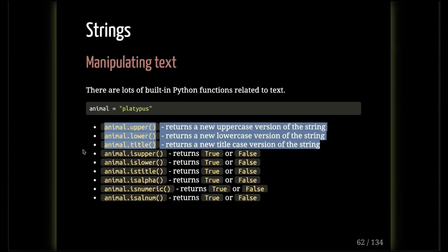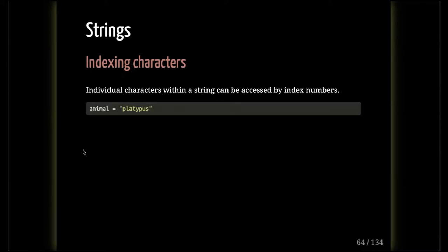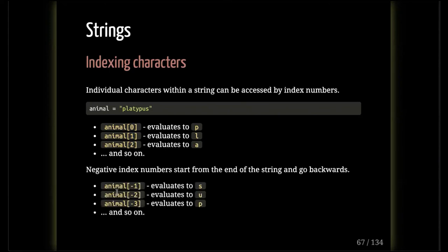You also have the ability to index characters within a string. If my string is 'platypus', index number 0 points to P, index 1 to L, index 2 to A, index 3 to T, index 4 to Y. You put index numbers in square brackets to extract individual characters — those come back as strings with a single letter. Negative indices go backwards: negative 1 gives you S, negative 2 gives U, negative 3 gives P. This is useful — if you just want the last character regardless of string length, animal[-1] always gives you the very last character.